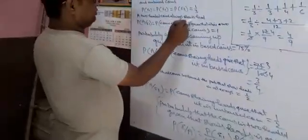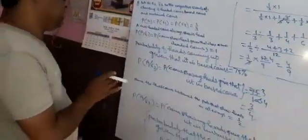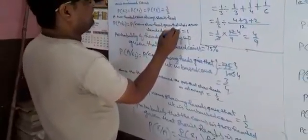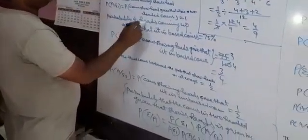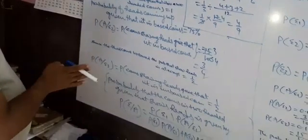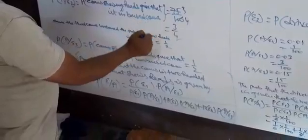A two-headed coin always shows heads, so P(A|E1) where A is the event of showing heads given it is a two-headed coin equals 1. P(A|E2), that it shows heads given it is a biased coin, equals 75%, which is 75/100 = 3/4.